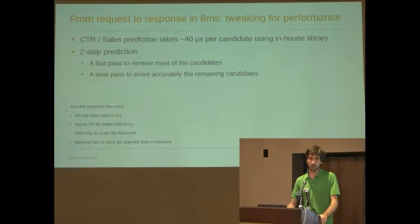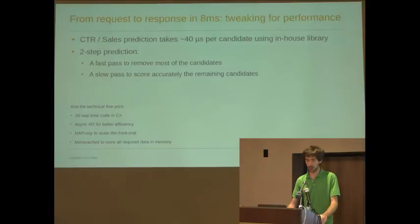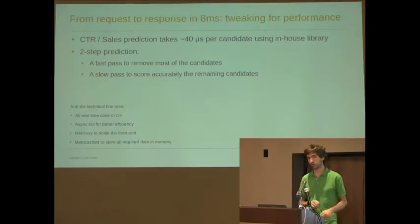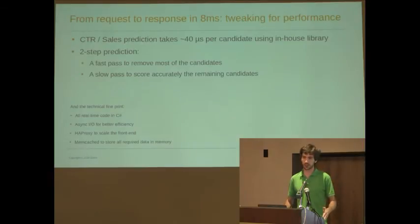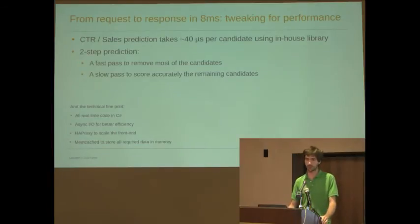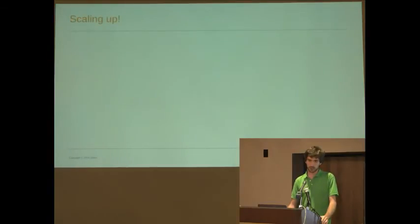How did we actually achieve the 8 millisecond response time? We built a prediction library entirely in-house in C#. It takes about 40 microseconds to compute a score for an item. We predict everything in two steps: first a fast pass with a very limited amount of inexpensive features to trim about 80% of the candidates, and then the remaining 20% get a slow pass with all the features available to get the best ranking. We do all the real-time code in C#, use asynchronous I/O to maximize server usage, HA proxy to scale the front end, and Memcached to store data in memory. That scales up quite nicely.